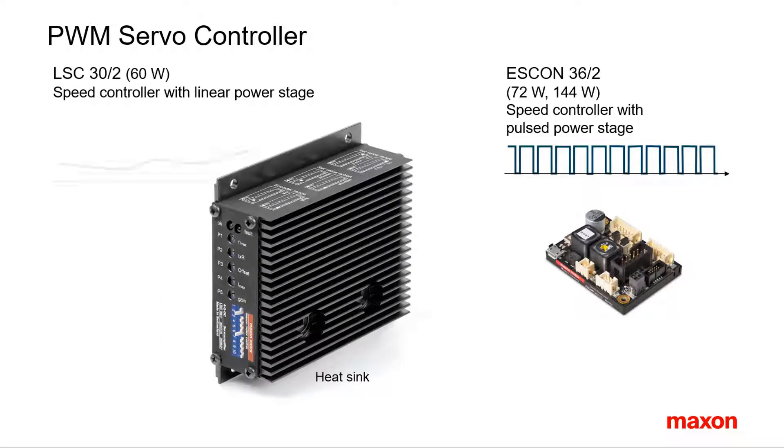As an example, let us compare the size of an older LSC speed controller with linear power stage to the size of a newer ESCON servo controller with pulsed power stage. The pictures are approximately to scale. The dimension of the LSC servo controller is much larger, essentially dominated by its huge heatsink. Observe the additional built-in inductances of the ESCON. The function of them will become clear in the following.